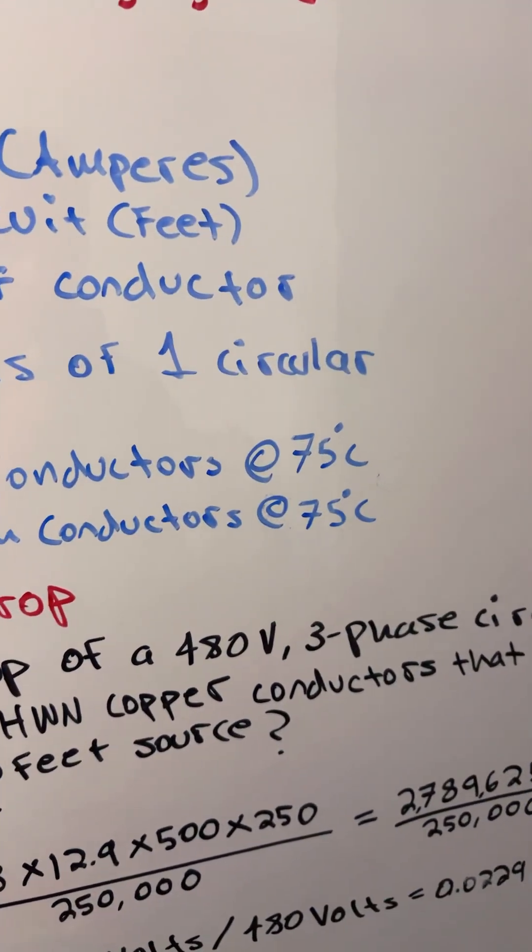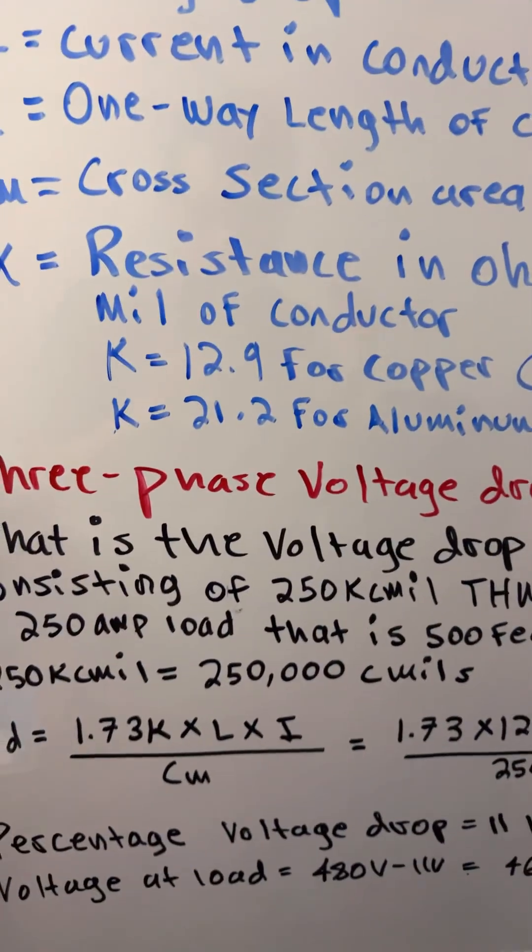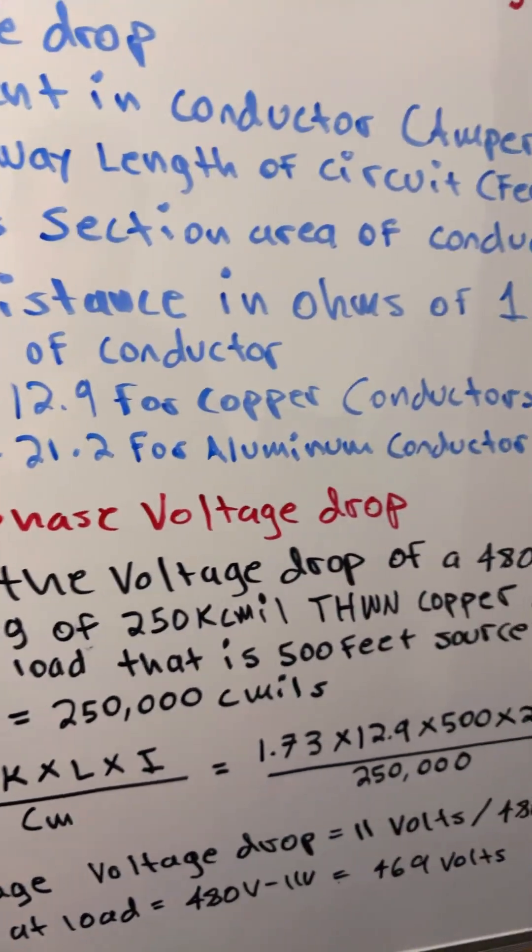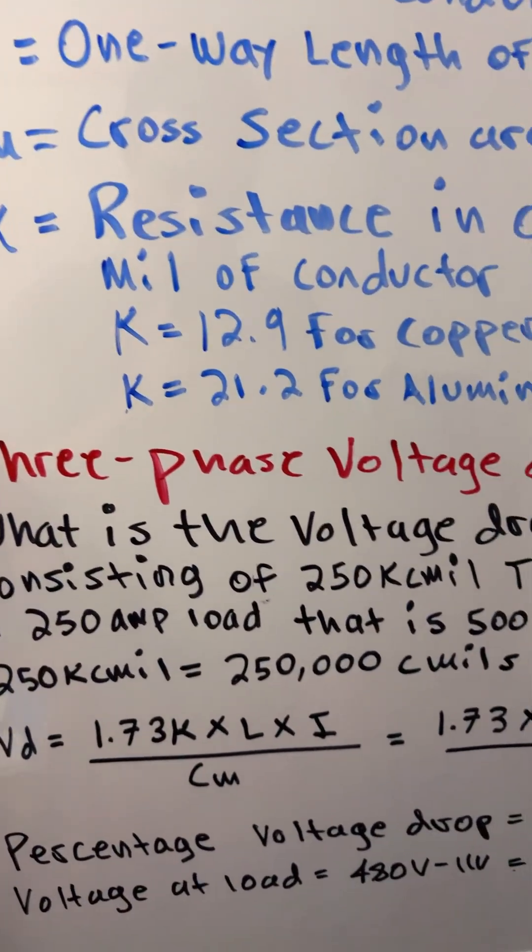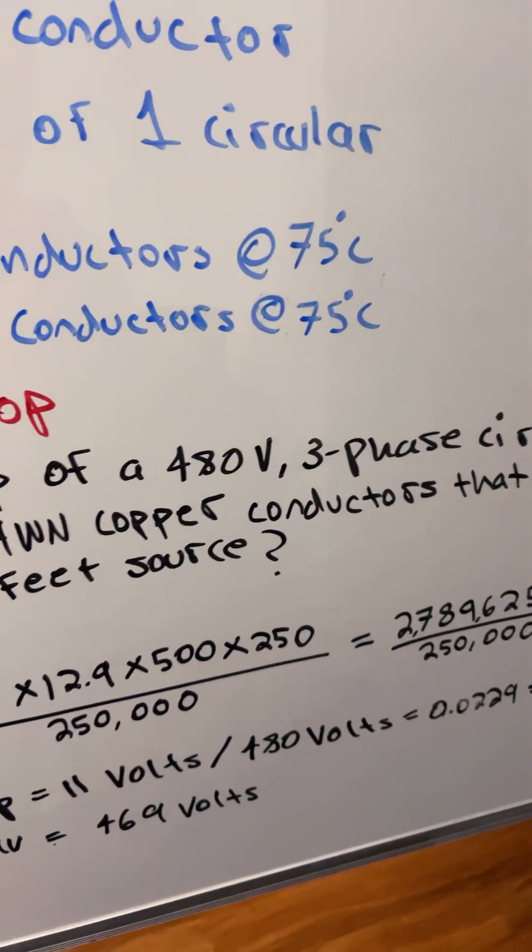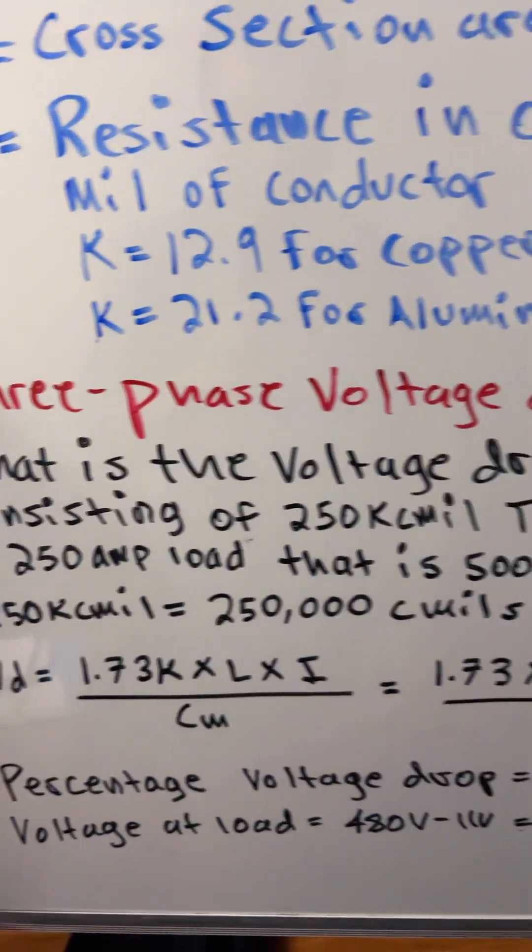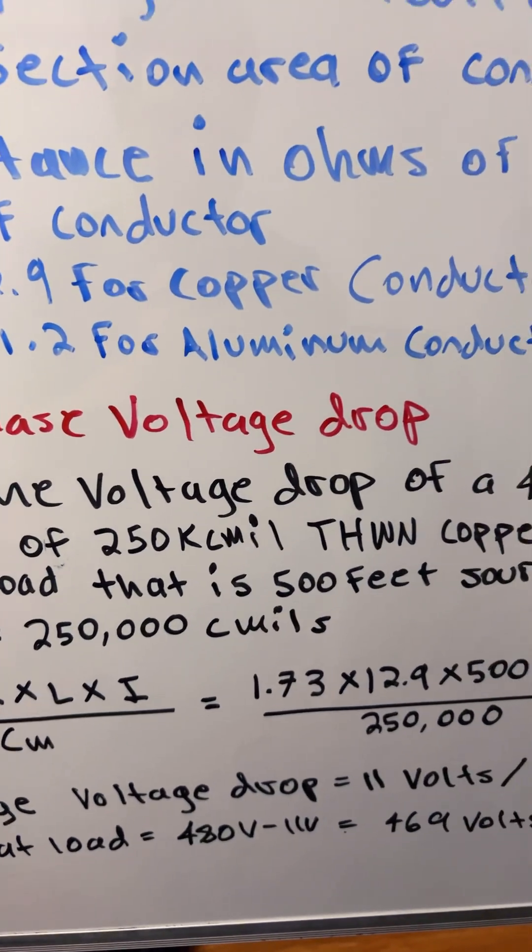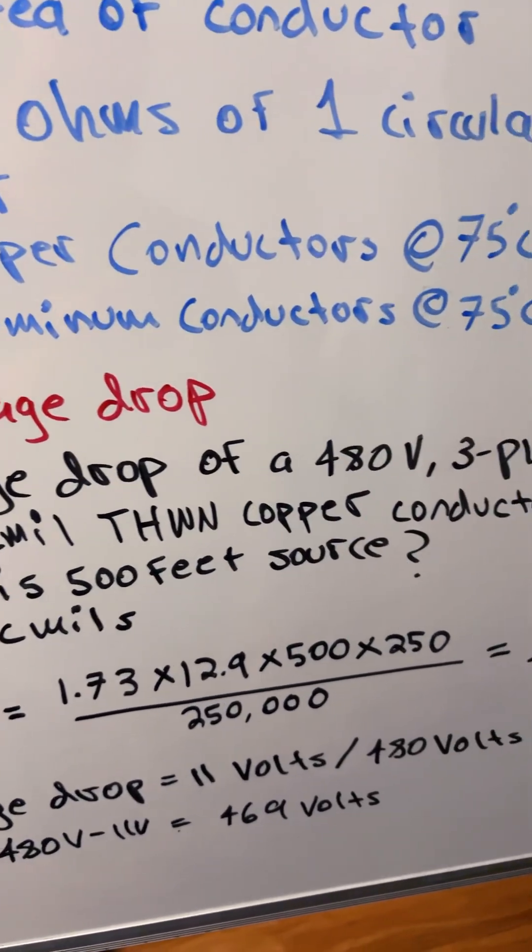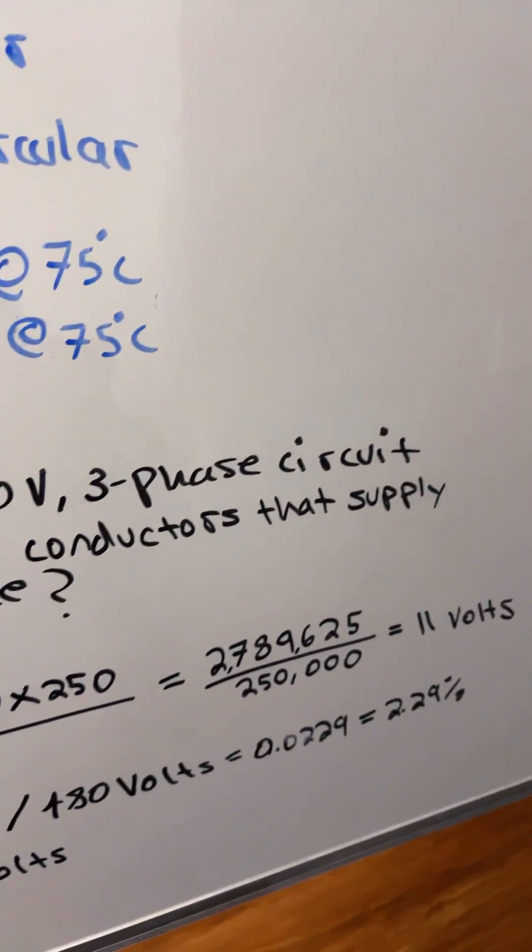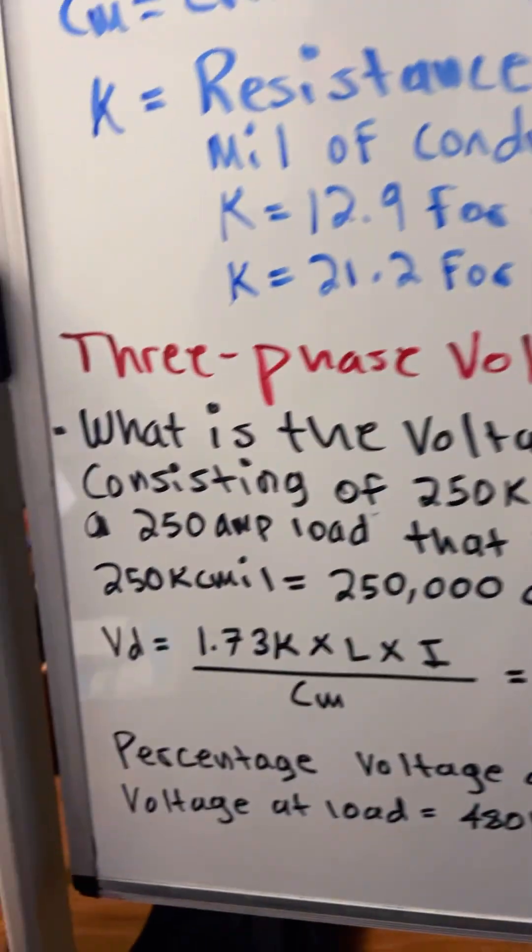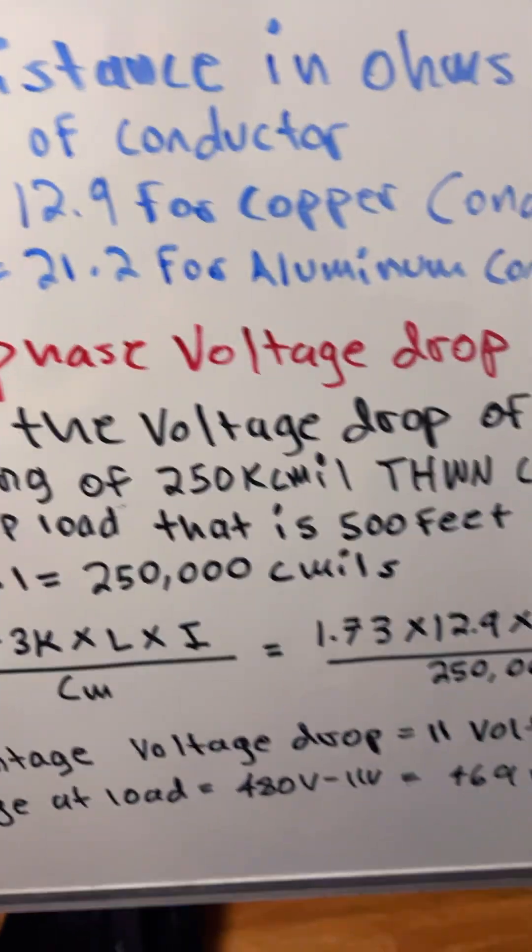So here's the three-phase voltage drop example: what is the voltage drop of a 480 volt three-phase circuit consisting of 250 kcmil THWN copper conductors that supply a 250 amp load that is 500 feet from source?